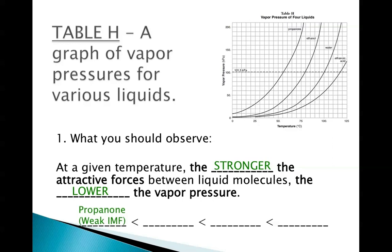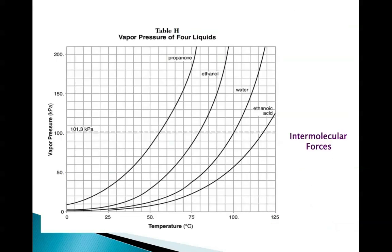So propanone has the weakest IMFs. And as we go up, ethanol, water, ethanoic acid has the strongest IMFs. If I'm looking at IMFs and I pick any temperature, I'm going to see that propanone has the highest vapor pressure, meaning that has the most amount of particles that are evaporating or vaporizing into a gas, and thus has the weakest IMFs. Ethanoic acid has the lowest vapor pressure, meaning it has the least amount of gas particles being produced, so those have the strongest IMFs. This is something we'll come back to, but I would definitely take the time to mark this down in your packet.